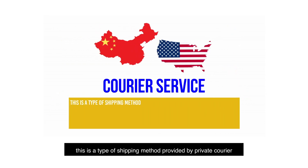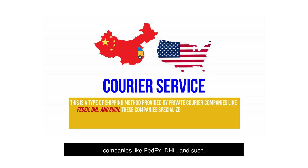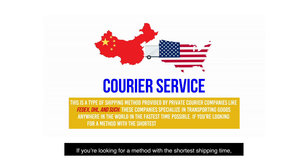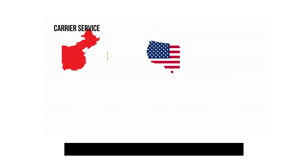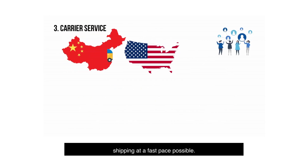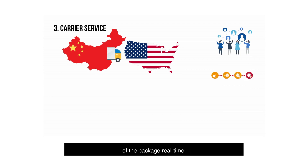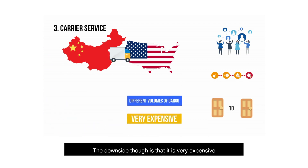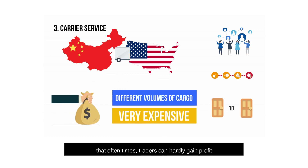Courier service. This is a type of shipping method provided by private courier companies like FedEx, DHL, and such. These companies specialize in transporting goods anywhere in the world in the fastest time possible. If you're looking for a method with the shortest shipping time, this is for you. These companies have robust networks which make shipping at a fast pace possible. Customers of couriers can track the delivery of the package real-time. Normally, these companies offer door-to-door deliveries. The downside, though, is that it is very expensive — oftentimes traders can hardly gain profit using this type of shipment method.